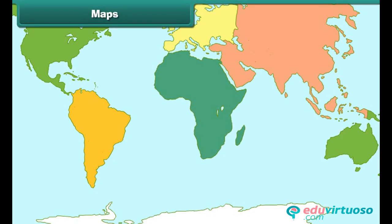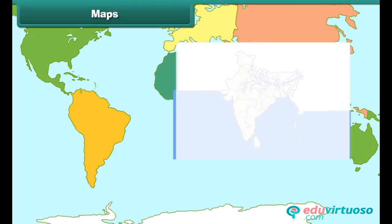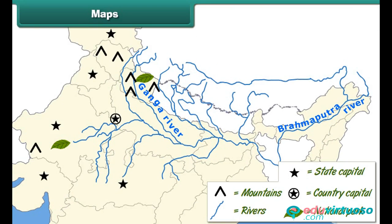A map represents some portion or all of Earth's surface diagrammatically. It shows countries of the world, their capitals, cities and towns. It also shows the various landforms and water bodies on Earth. Maps use pictures or signs to denote rivers, mountains, etc.